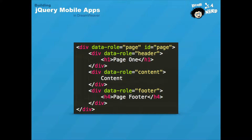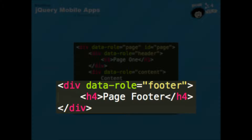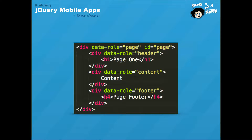The final element is the footer. The footer shows up at the bottom, or right after the content if the content doesn't fill the entire screen. If you want it to always show at the bottom, we'll learn how to set it as fixed so it always appears at the bottom regardless of screen size. You can put an h4 tag in the footer for a title, or navigation bars and button items that take users to different pages. So those are the three parts that make up a page: a header, content, and footer.